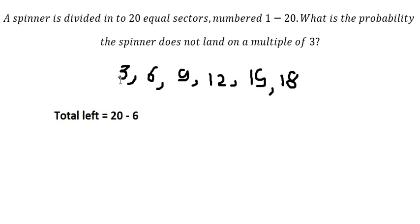...six, because we counted six numbers in here, and we got fourteen. So the probability that the spinner does not land on a multiple of three is fourteen over twenty. So we...